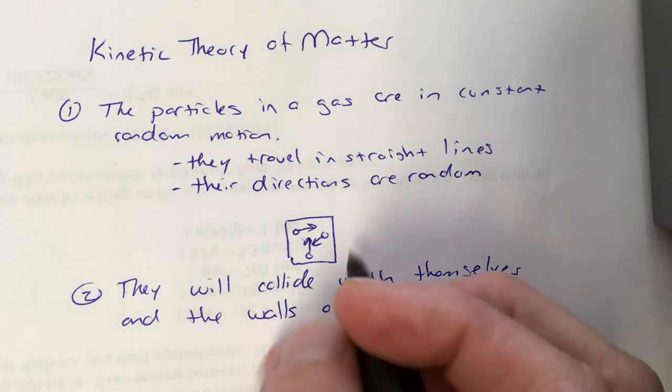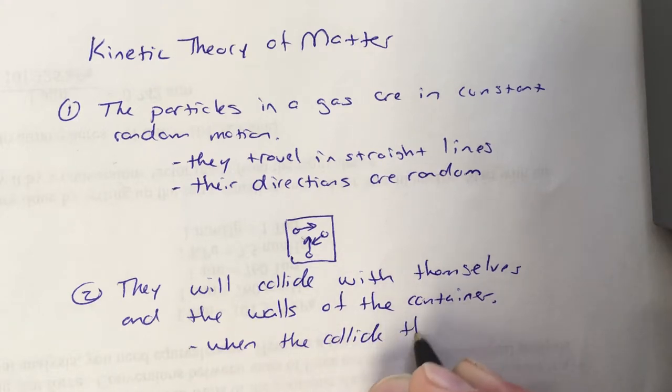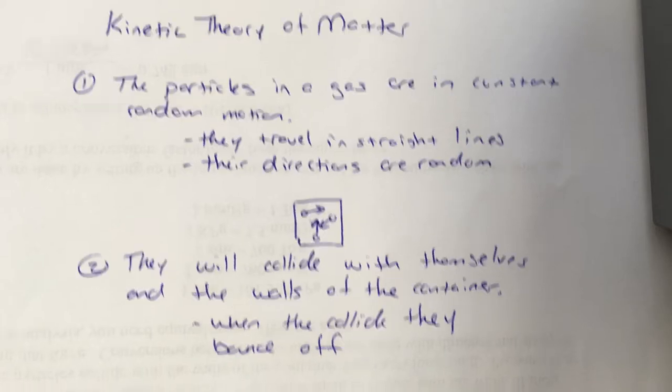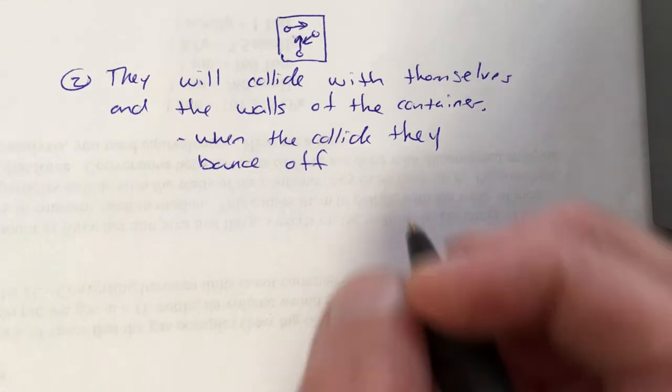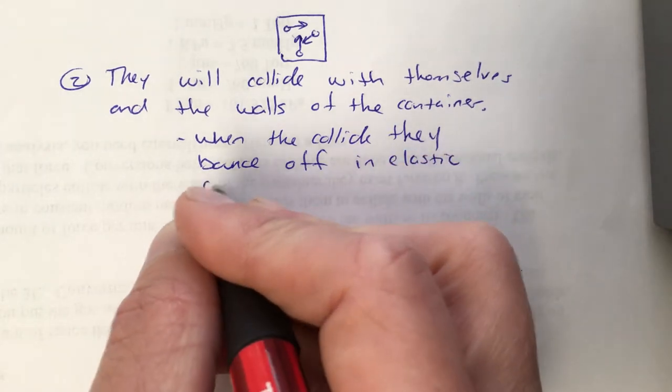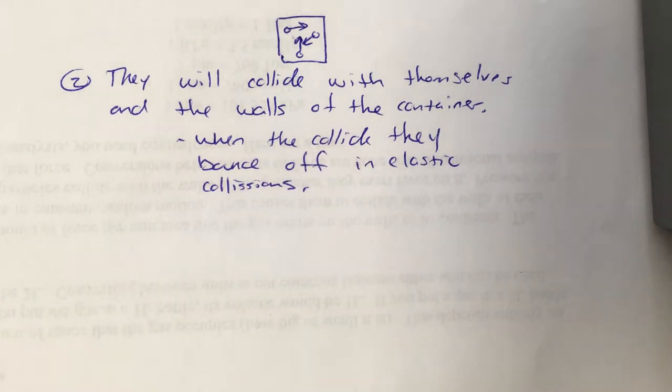Now when they do hit each other or the walls of the container, they bounce off. So they'll bounce off each other. They'll bounce off the walls, and they do so in what's called an elastic collision. What that means is they don't lose any energy in those collisions. They just bounce off. They don't speed up. They don't slow down. They just bounce off each other and go different directions.